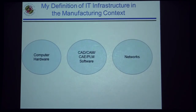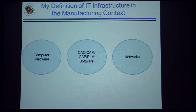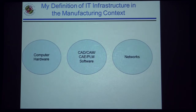Before going further, let me share my definition of information technology, because the term gets used by many different people in many different contexts. What I mean by information technology is a combination of computer hardware, CAD, CAM, CAE, PLM software used by the manufacturing industry in their daily operations, and networks used for communicating information between machines, between machines and computers, and between computers.